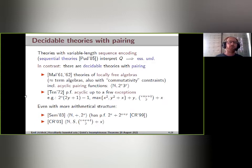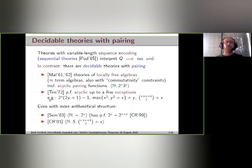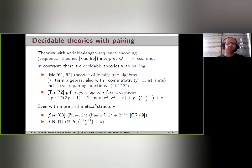As a special case of these locally free algebras we have the so-called acyclic pairing functions, which are locally free algebras in a signature with a single binary function. For example, if you take the structure of natural numbers with the function 2^x · 3^y, this is an acyclic pairing function and is a decidable structure by Malcev's results. These results were generalized by Tenni in his PhD thesis, where he considered pairing functions that are acyclic up to finitely many exceptions, or where exceptions are well-behaved in some technical sense.